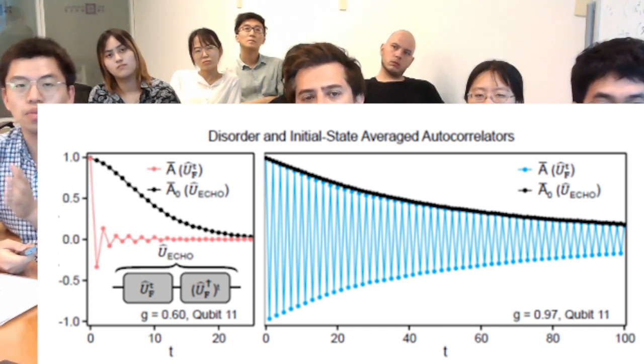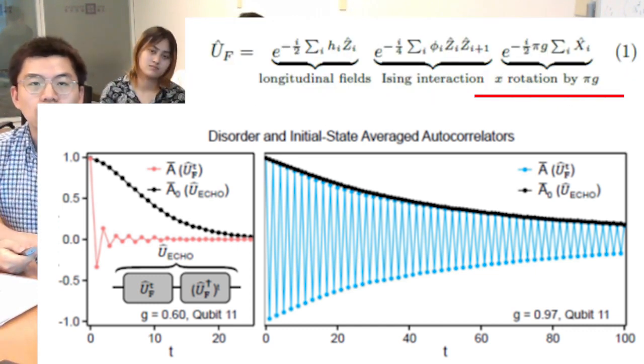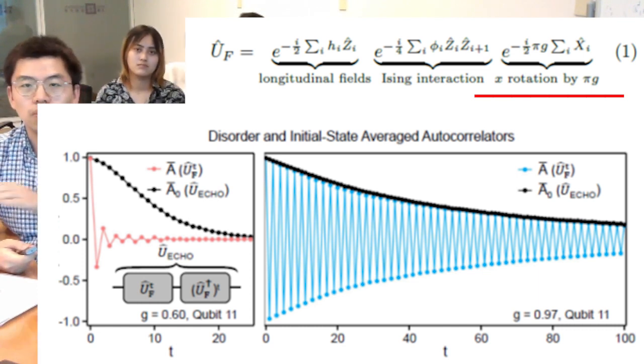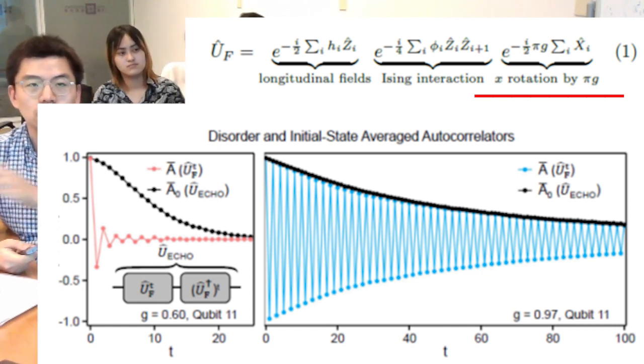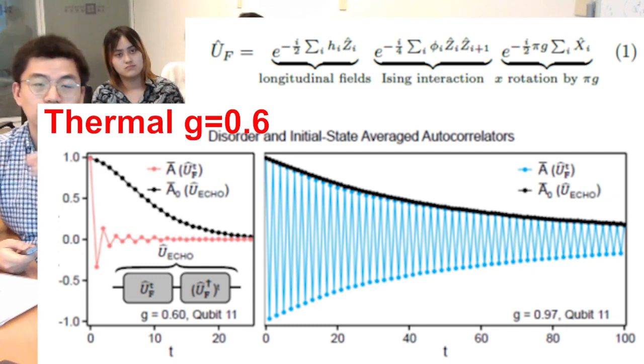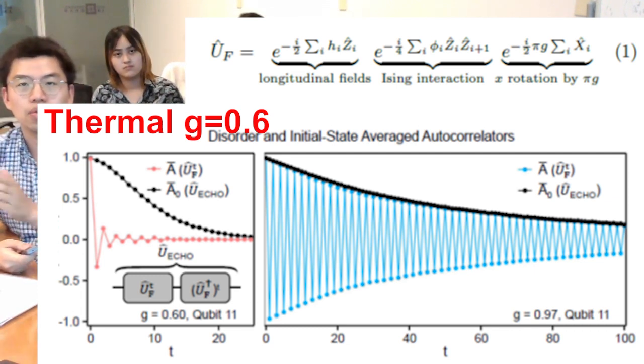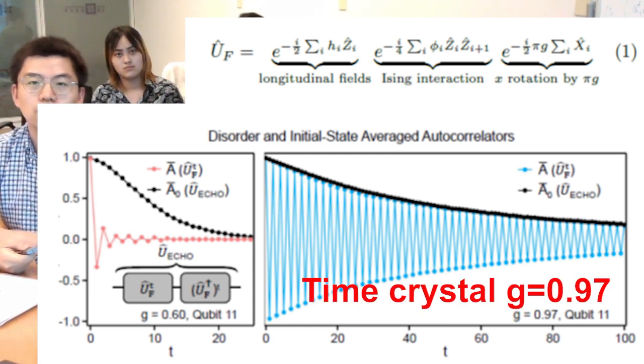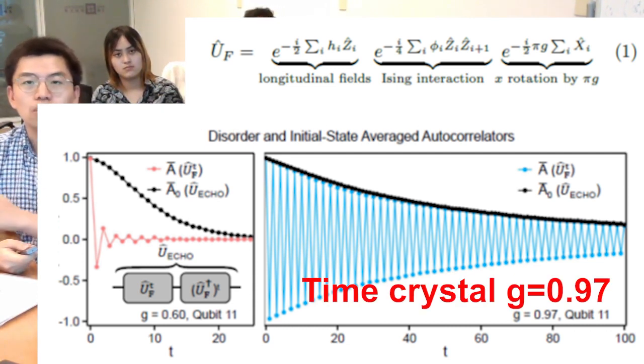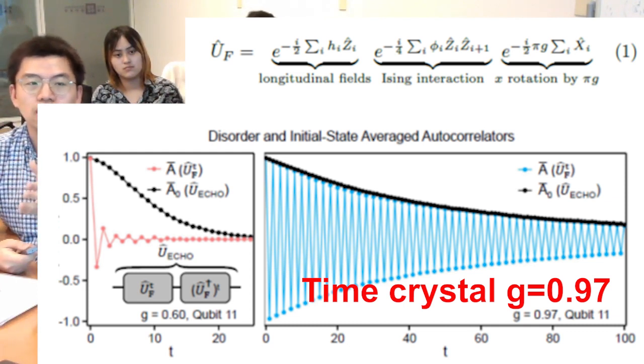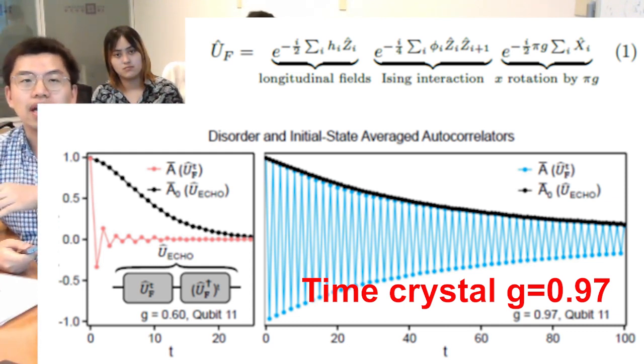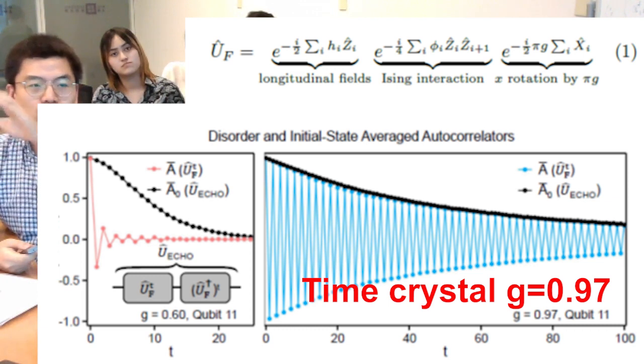This kind of discrete time crystal is realized in the case that we have an out of equilibrium phase. Because if you have a thermal phase, for example, if this g is very small, this Ising model will just go to a thermal phase where you simply have decay. You will not have this. But if you have g equal to 0.97, which is close to 1, you will have this phase as out of equilibrium and it will oscillate among two eigenstates.